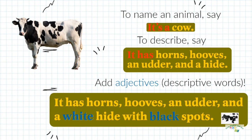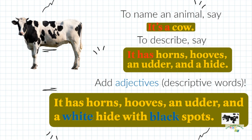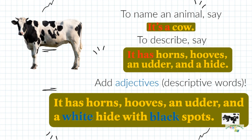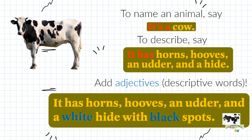It has horns, hooves, an udder and a wide hide with black spots.